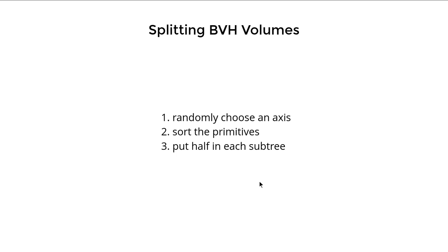The book chooses a really simplistic approach that is not very efficient but very easy to code, and this is the approach we will use here. If you are interested in how a proper BVH should be constructed from a list of objects, we will cover the Physically Based Rendering book later and it has a chapter on this topic. But for now let's follow this book's approach.